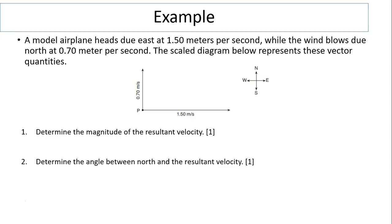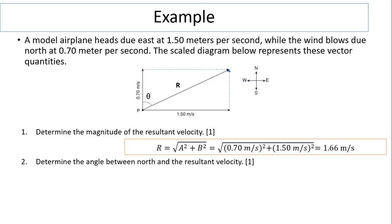We can also solve this problem using Pythagorean theorem and trig functions. To determine the magnitude, first we draw it out. As you can see, the resultant is the hypotenuse, so we use Pythagorean theorem. R equals square root of a squared plus b squared, giving 1.66 meters per second. When we did this problem using the graphical method, we had 1.65 meters per second. As you can see, it is similar, close to 1.66, but using a mathematical way, we have a more accurate result.